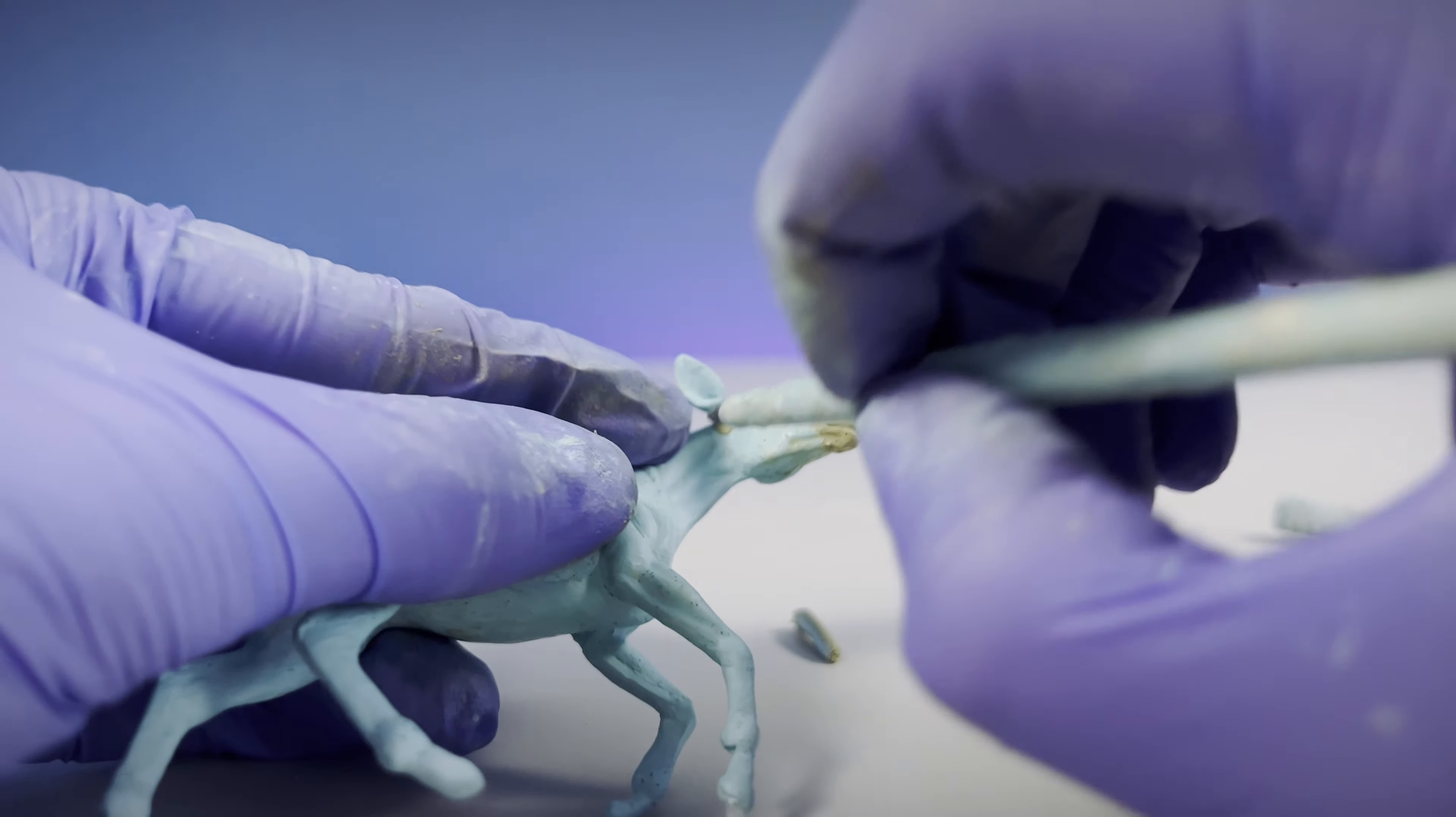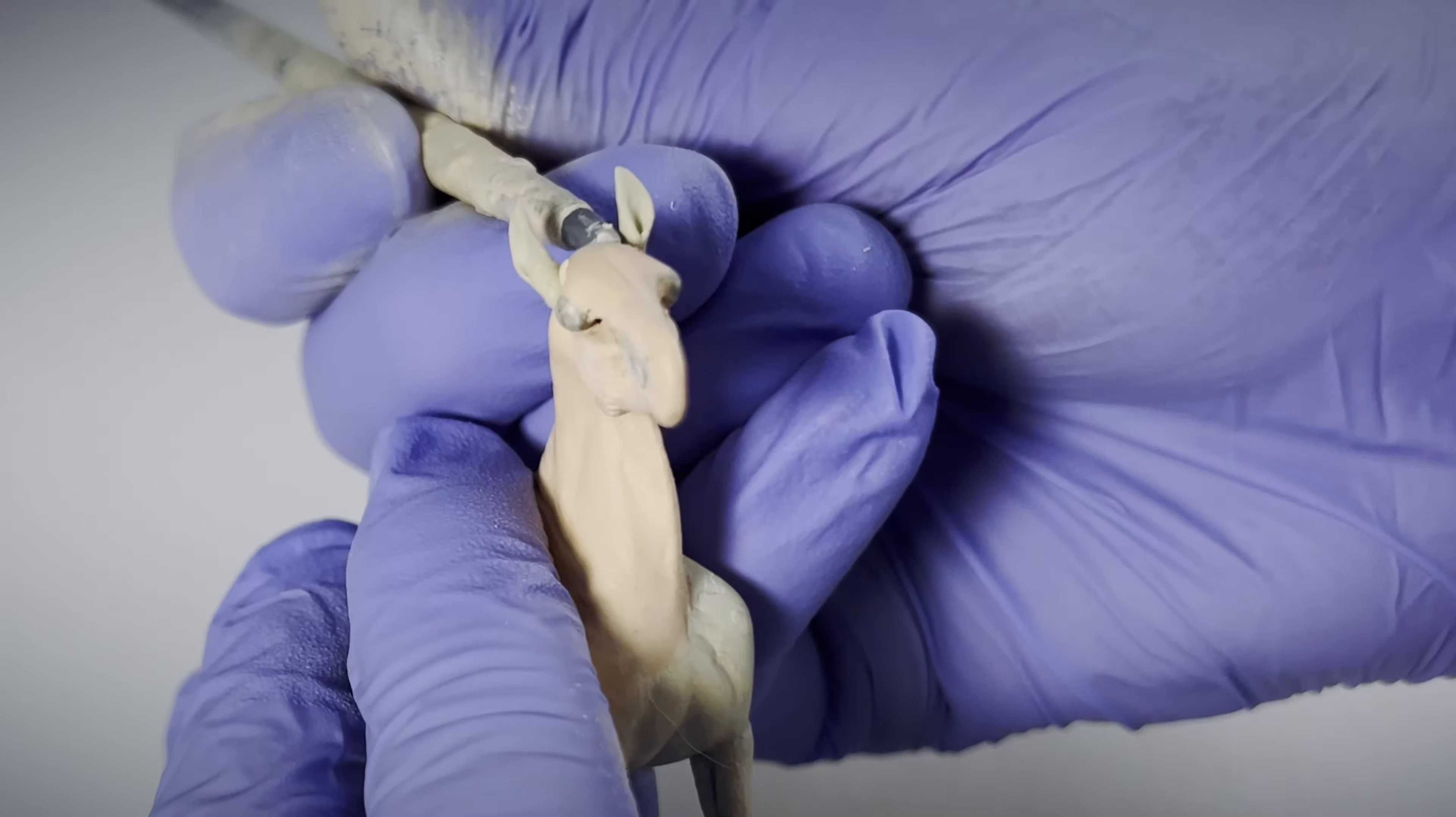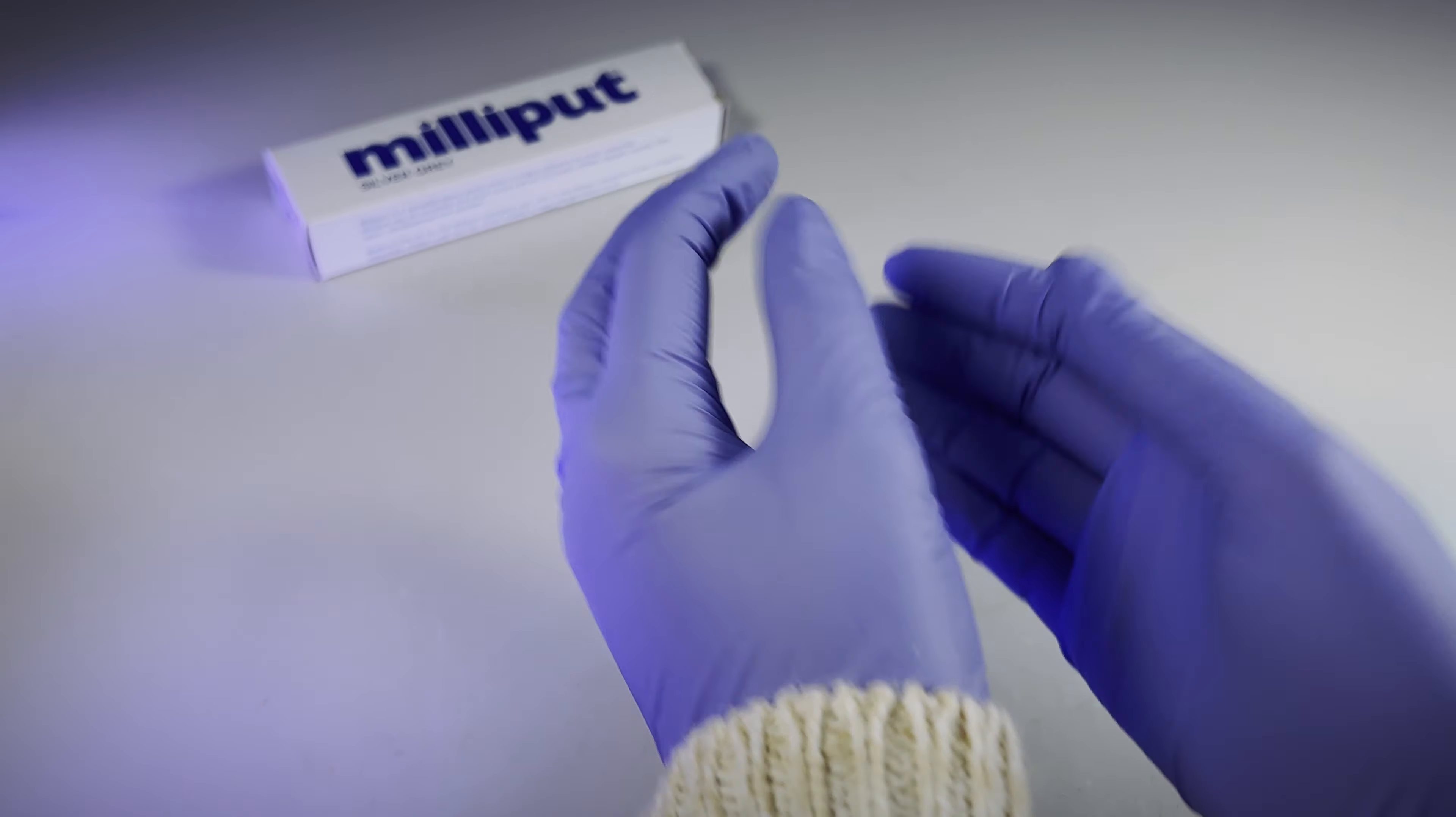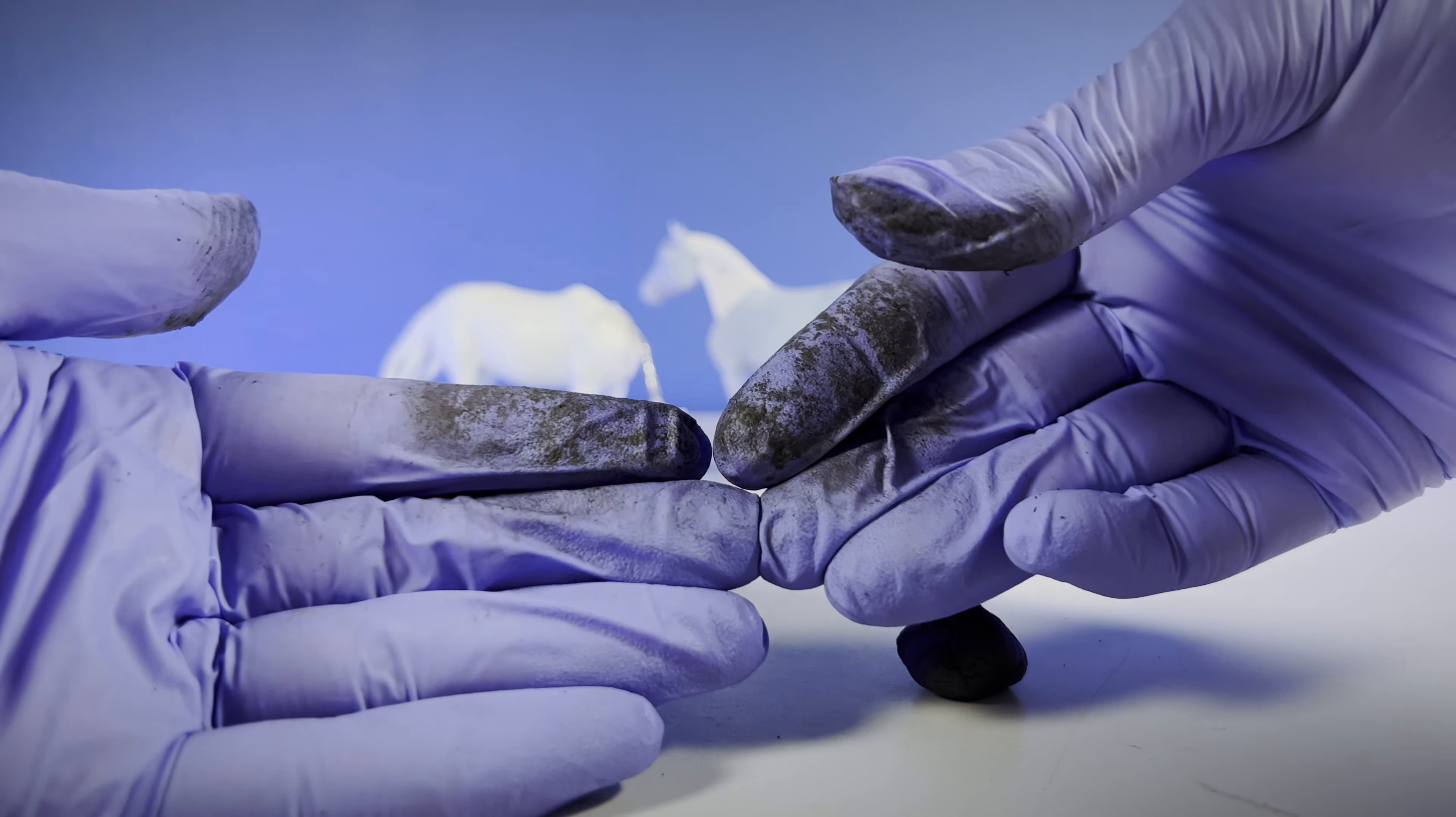Once you begin mixing the two parts, the chemistry action that causes the curing begins. Within 30 to 60 minutes, you'll notice it slowly hardening as you work with it. The box recommends always wearing gloves, and I wear tightly fitting nitrile gloves throughout the entire mixing and sculpting process. Milliput is also sticky, so wearing gloves keeps your hands nice and clean.